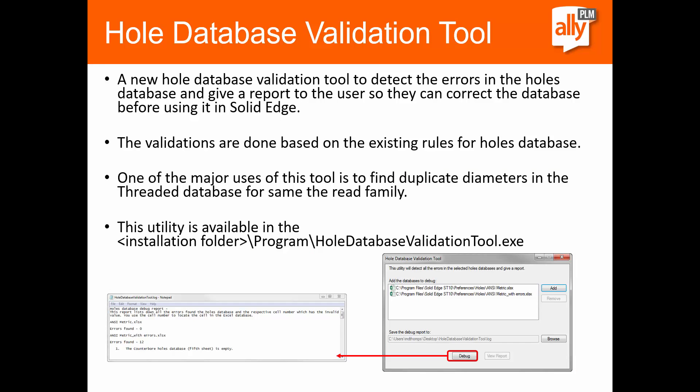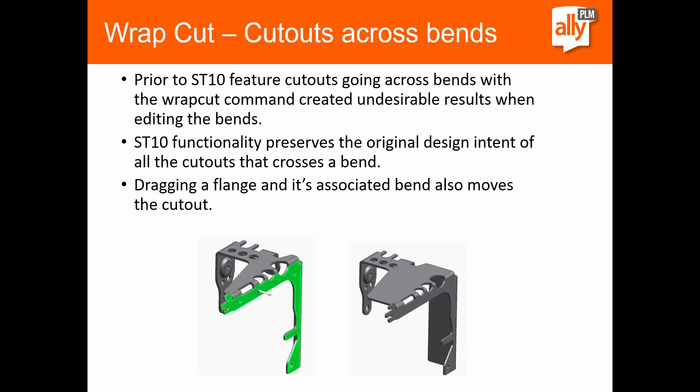We also have a hole database validation tool. In the past, we switched to using Excel sheets to store all of our hole types. Now when we make a change to the Excel sheets, we have a utility that can go in and help us find any errors. Before, if something was messed up you had to hunt and find it on your own — flip through different tabs for counterboard, countersink, etc. But now we can run this executable, add in that Excel sheet, and look at the log file to see where our errors are. We'll run an example of that.